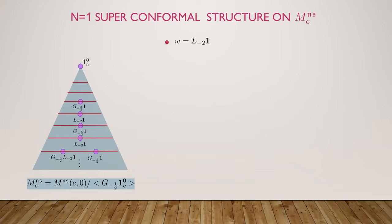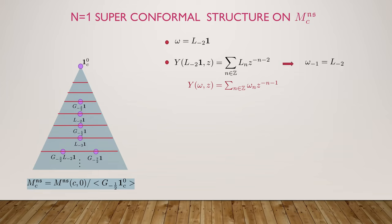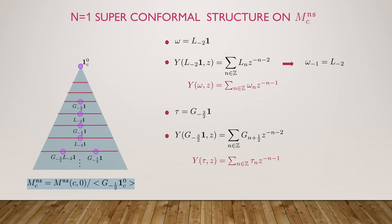This vertex operator superalgebra has superconformal structure — it really has three special vectors. The conformal vector omega: if we write Y(omega) in the standard vertex algebra notation, we see the minus-1 product of omega is L_{-2}. We also have another special vector called tau, the Neveu-Schwarz vector. If we rewrite it in standard product expansion, tau's minus-1 product is G_{-3/2}. I mention these minus-1 products because they'll be important in a moment.